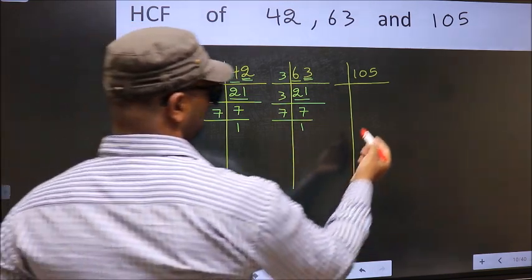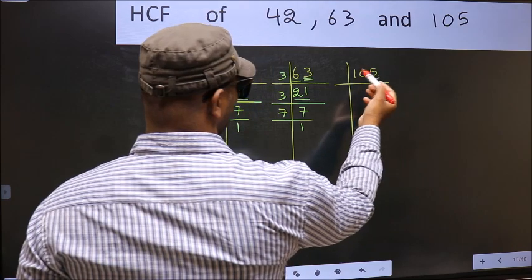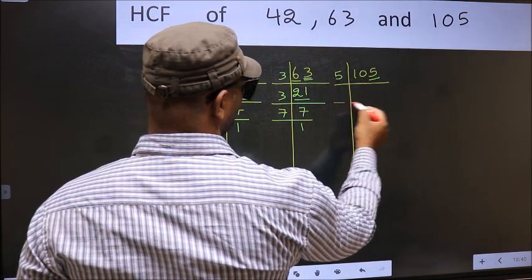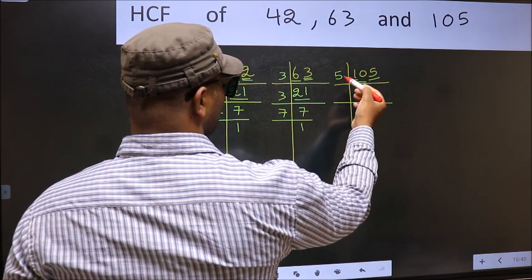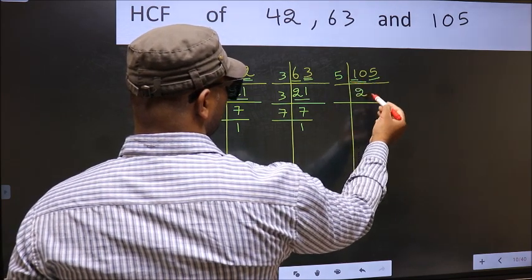Now the other number. Last digit 5, so take 5. First number 1 smaller than 5, so 2 numbers, 10. When do we get 10 in 5 table? 5, 2 is 10. The other number 5. When do we get 5 in 5 table? 5, 1 is 5.